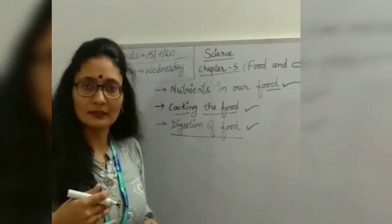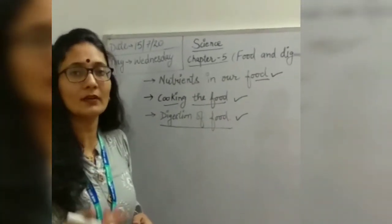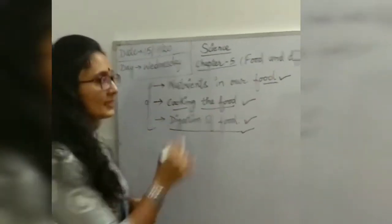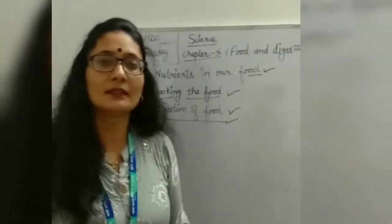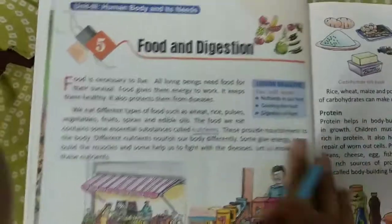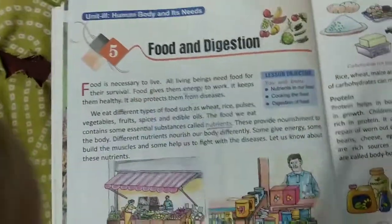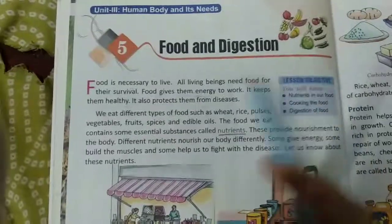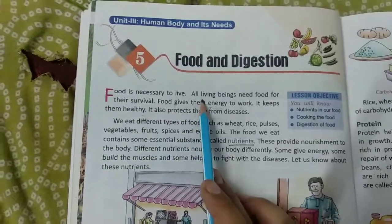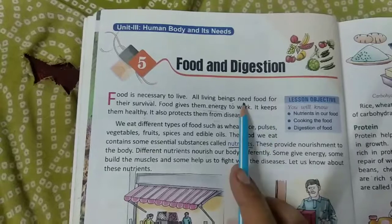And digestion of food — how the food we eat is digested in our body. We cover all these topics in this chapter. So let's start reading. Here is our Chapter 5: Food and Digestion. Food is necessary to live. All living beings need food for their survival — either plant or animal, everyone needs food.